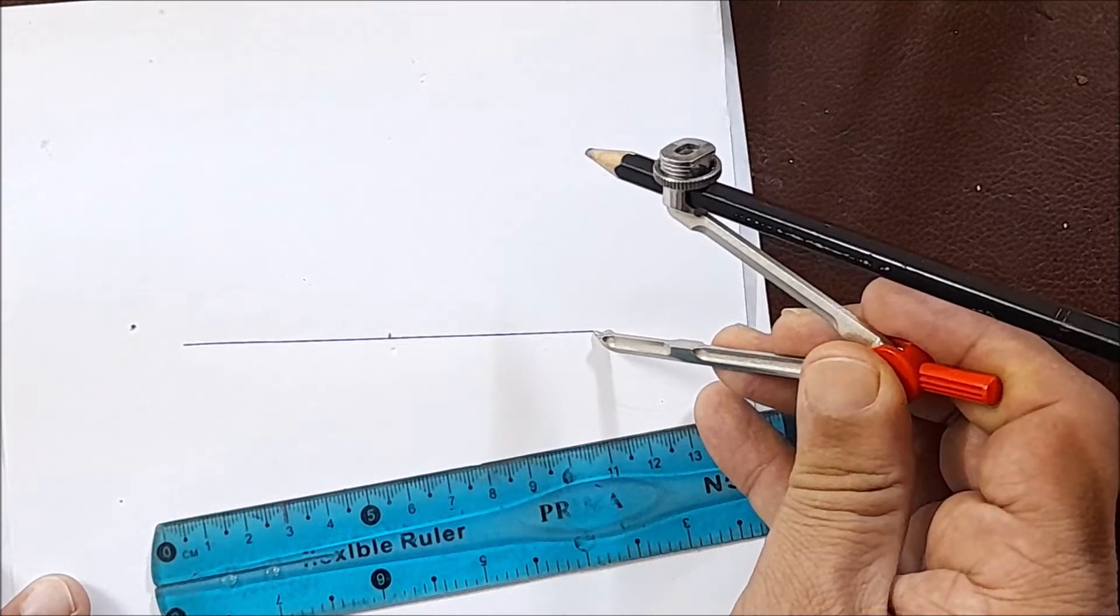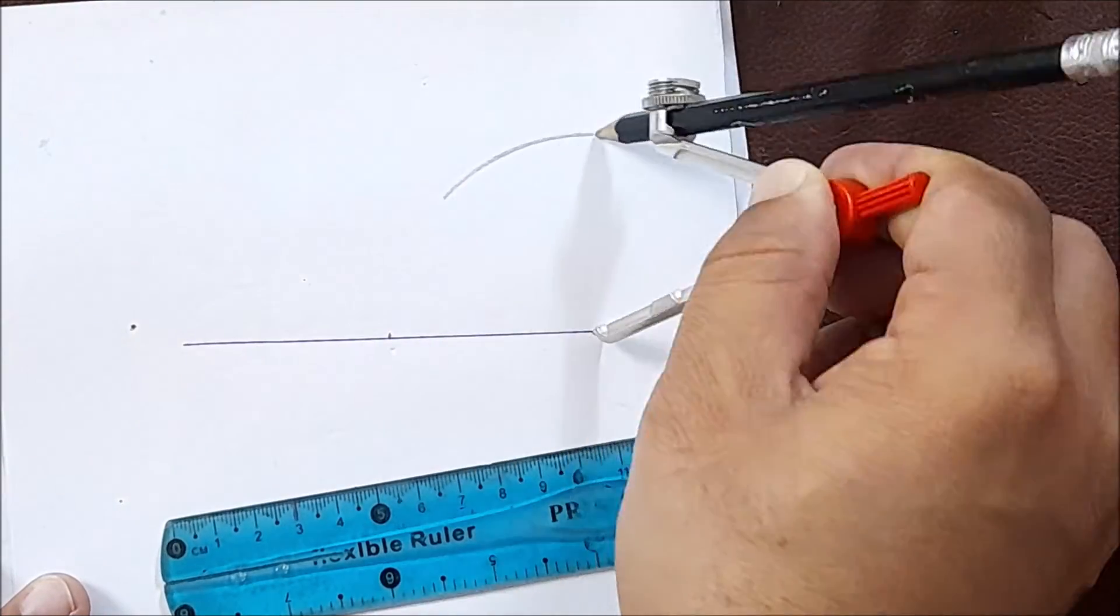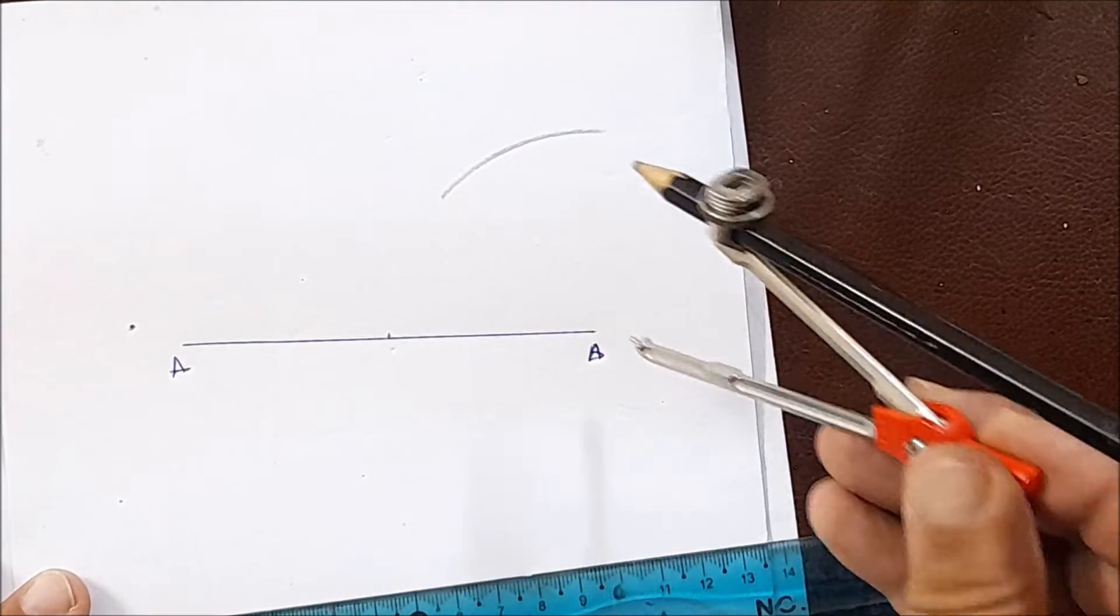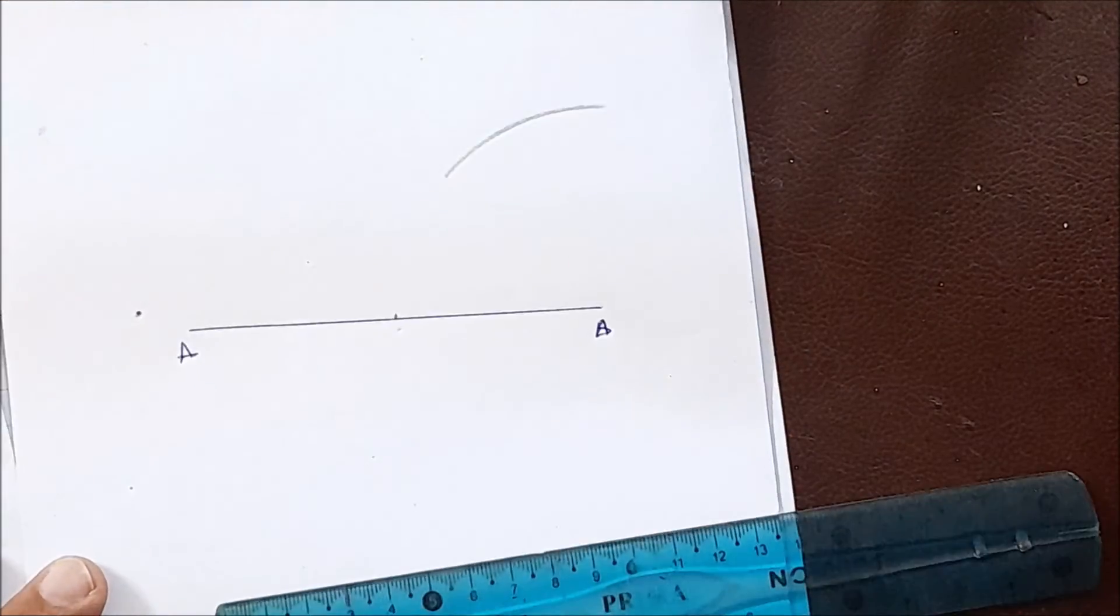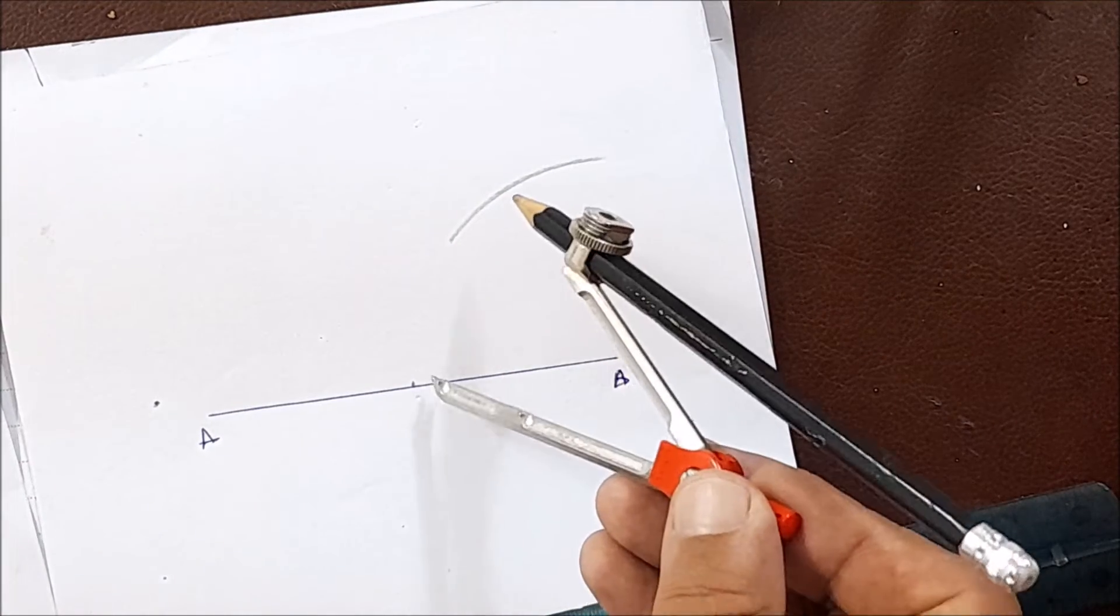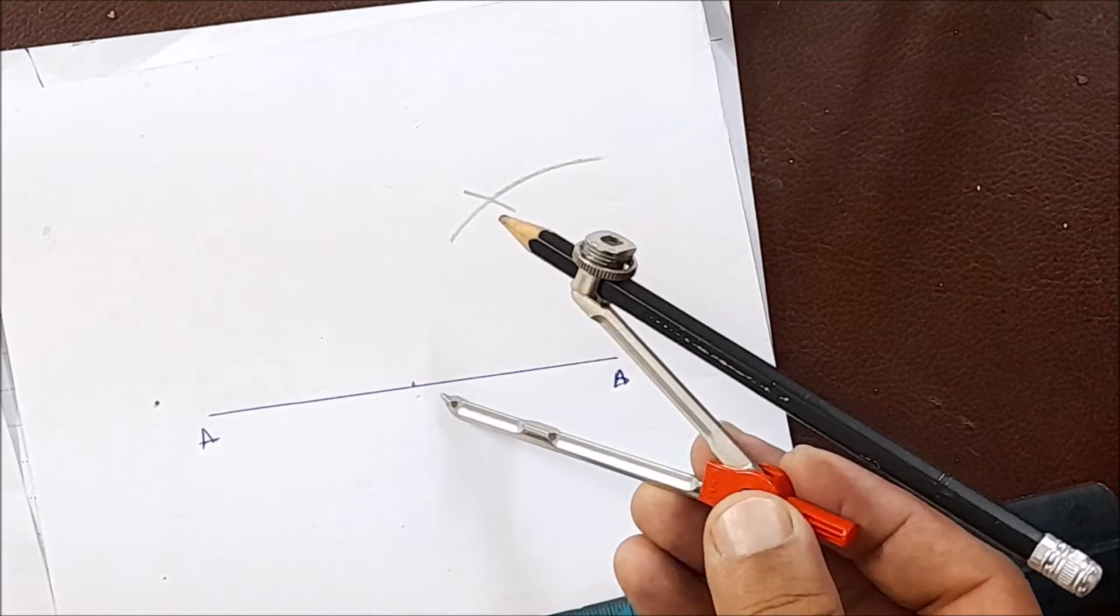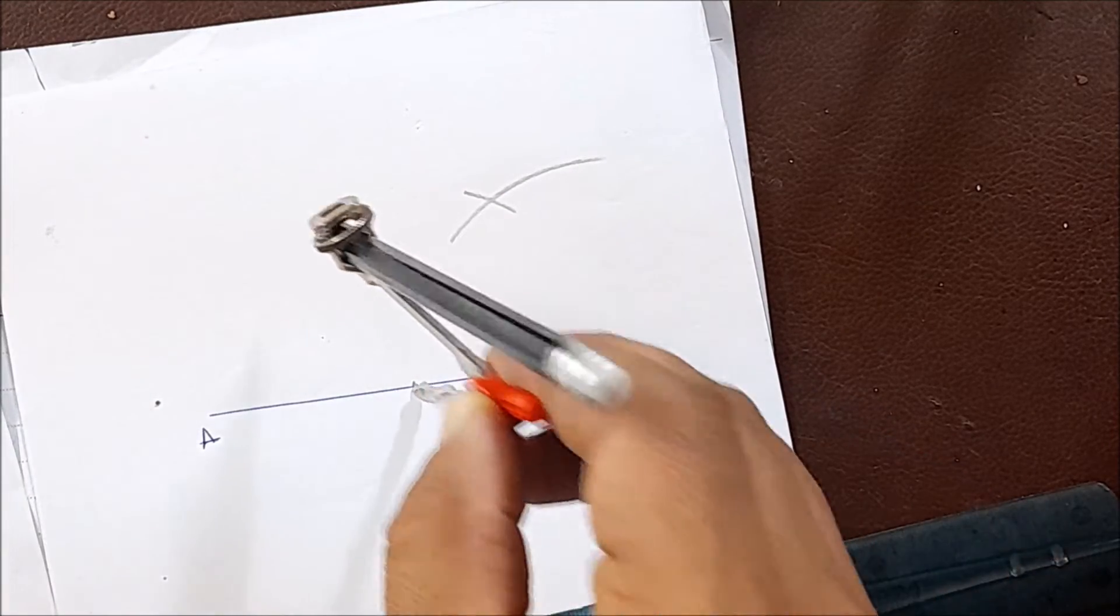You can name this point B. We will scribe an arc on point B. Now from the midpoint, we will cut this arc with another arc.